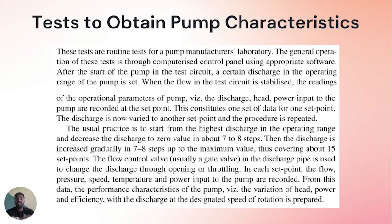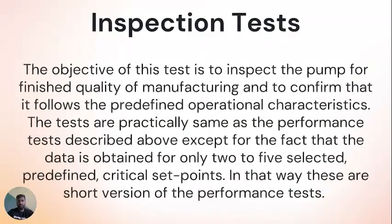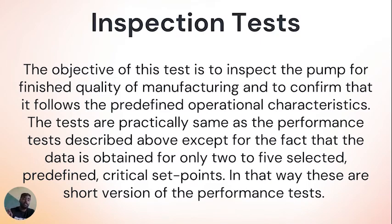Several tests to acquire pump characteristics are routine tests for pump manufacturer labs. After starting the pump in the test circuit, a certain discharge in the operating range is set; when flow is stabilized, readings of discharge, head, and power are recorded — this constitutes one data set for one set point. The discharge is then varied and the procedure repeated. Inspection tests confirm finished quality of manufacturing and predefined operational characteristics, obtaining data for only two to five selected critical set points — short versions of the performance tests.